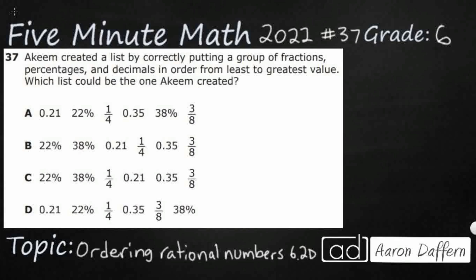Hello, and welcome to 5-Minute Math. Today we are looking at the 6th grade concept of ordering rational numbers. This is standard 6.2D in the great state of Texas, and we are using item number 37 of the 2022 released STAR test. If you haven't done so already, please go ahead and take a moment to pause the video, work this problem out on your own, unpause it, and we will look at our answers together.